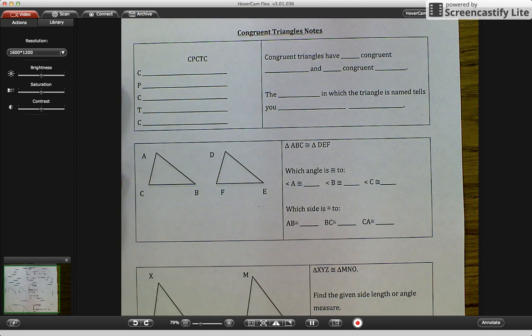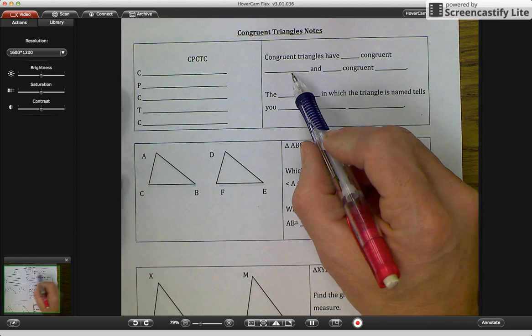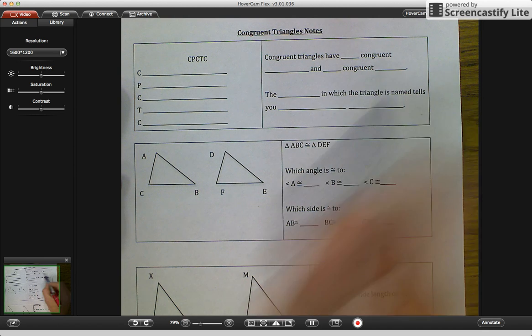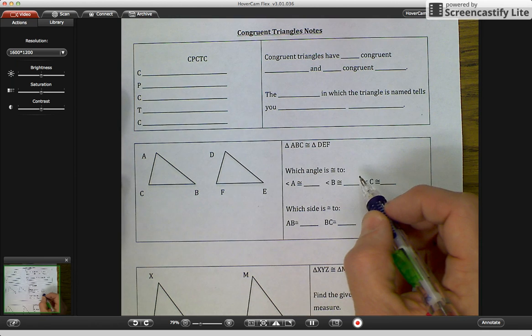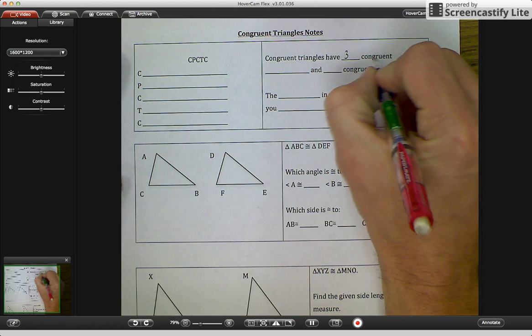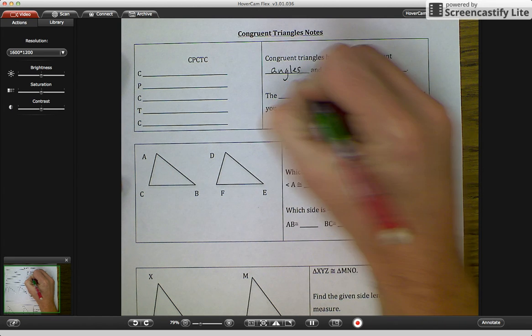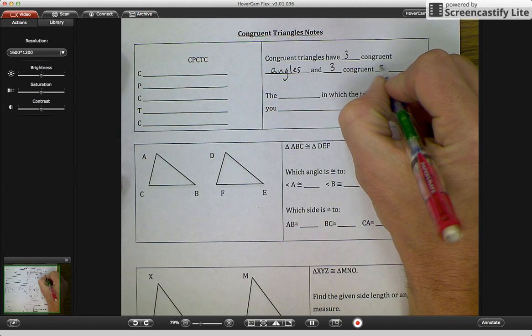The first sentence that we're going to talk about says congruent triangles have blank congruent blank and blank congruent blank. When we're dealing with triangles, we're talking about angles and sides. So congruent triangles have three congruent angles and three congruent sides.